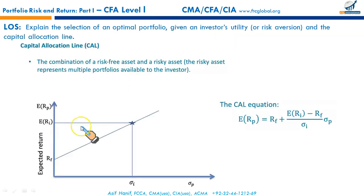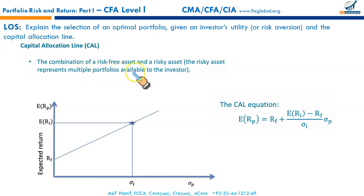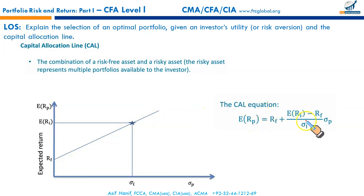The capital allocation line, which we discussed in the previous reading, shows the combination of the risk-free asset and the risky asset — basically the multiple portfolios available to the investor. Now let's see what the capital market line is about. The capital market line is essentially a special case of the capital allocation line.